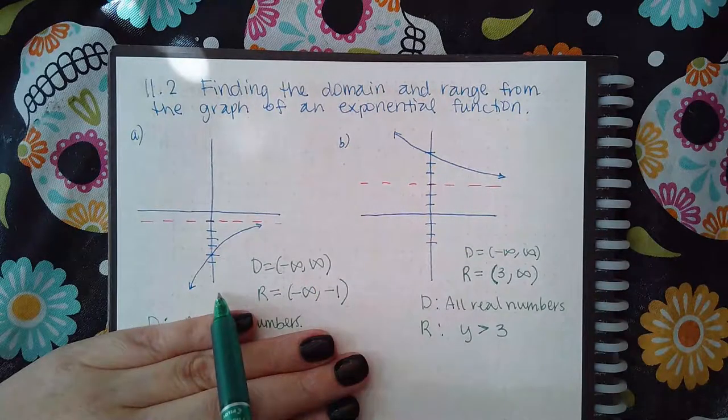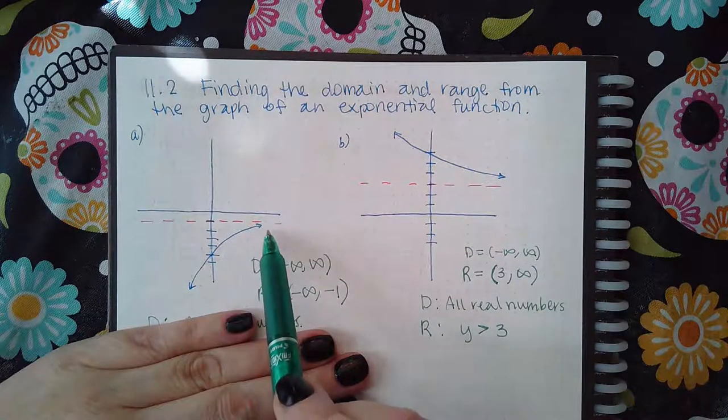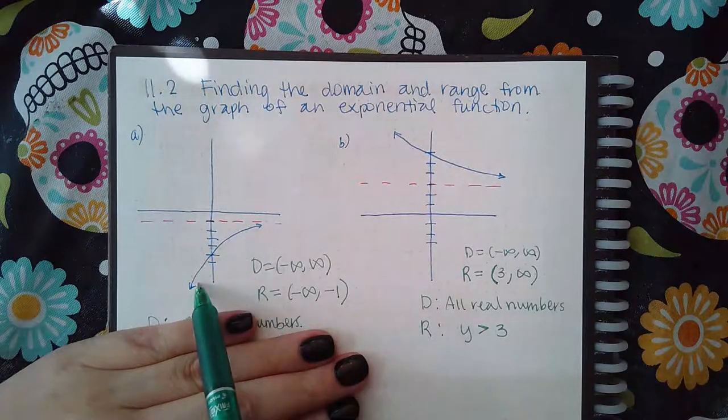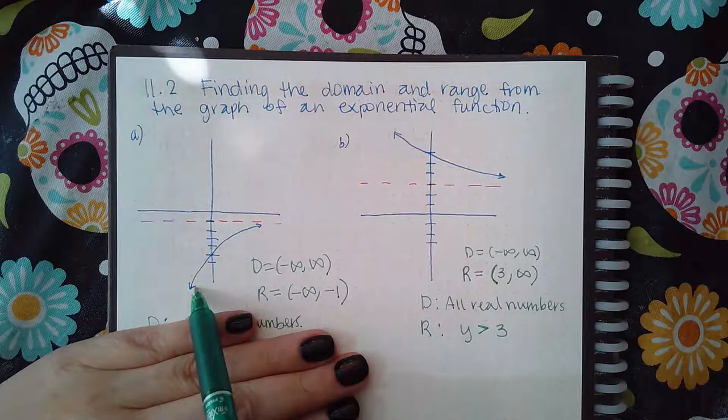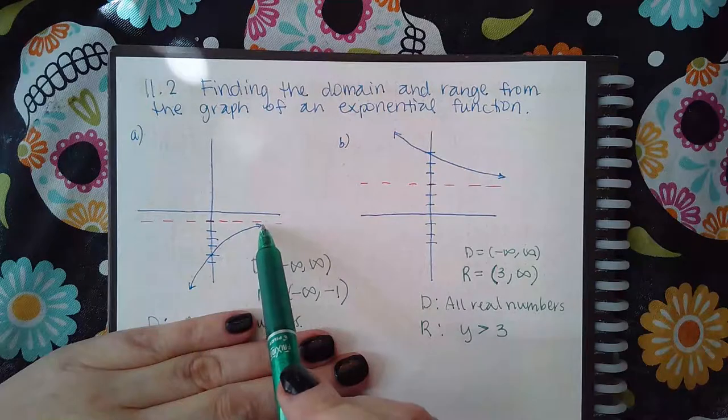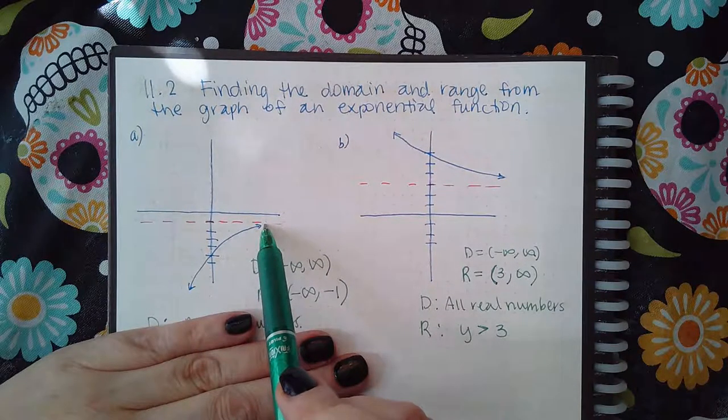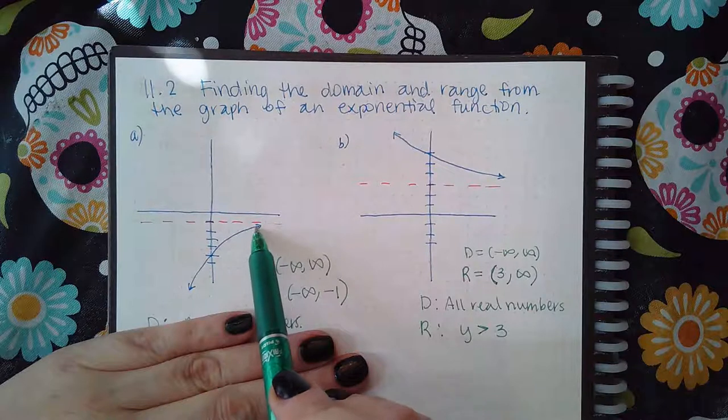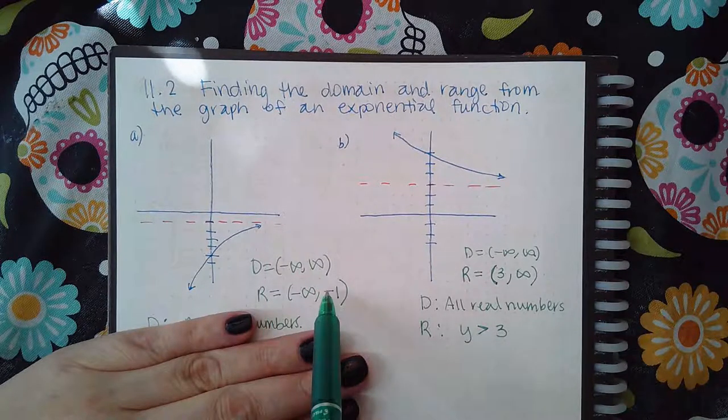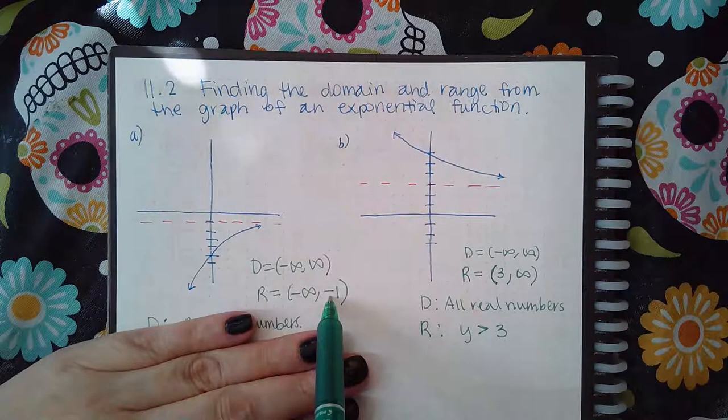The range is the y-value from the bottom of the graph to the top, so how far low does it go and how far up does it go. It goes down toward negative infinity and then it goes up towards this asymptote but never quite touches that asymptote. It gets very close, so it goes up to the y-value negative one but never touches y equals negative one. You use a parenthesis.